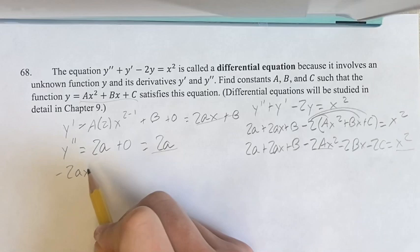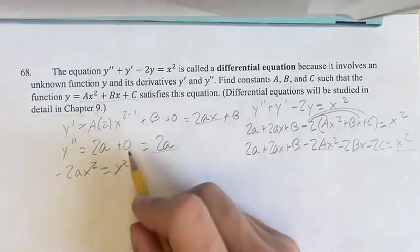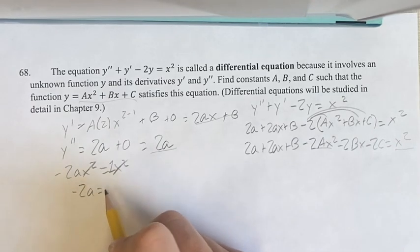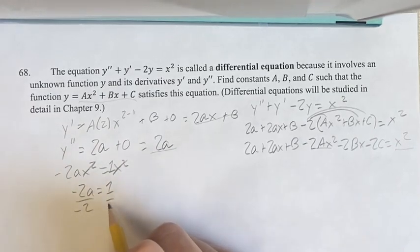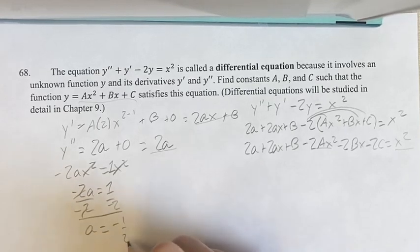Therefore, if negative 2ax squared equals x squared, canceling by x squared on both sides, there's an imaginary 1 out in front, you get negative 2a is equal to 1. Divide by negative 2, and you get a is equal to negative 1 half.